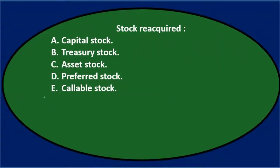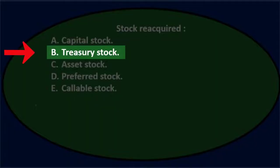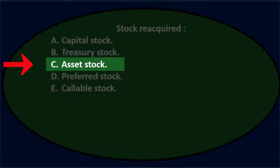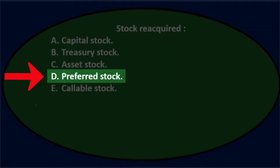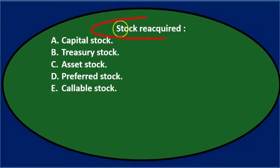Next question. Stock reacquired is: A, capital stock; B, treasury stock; C, asset stock; D, preferred stock; or E, callable stock. Let's go through the process of elimination.